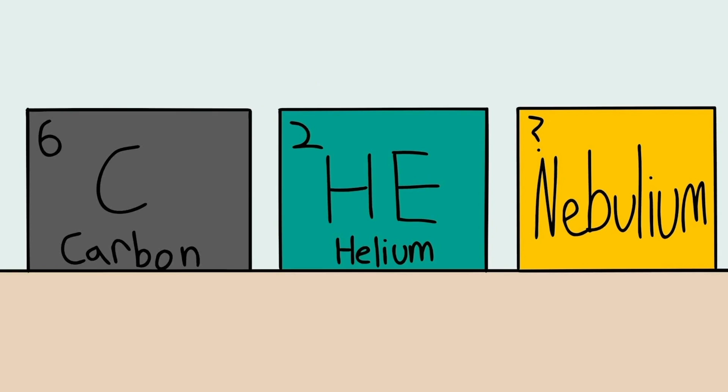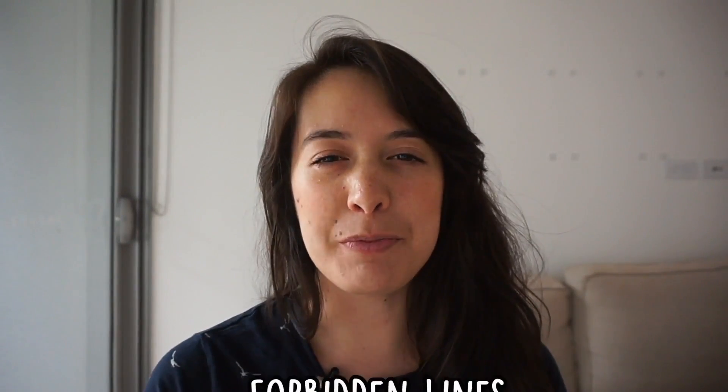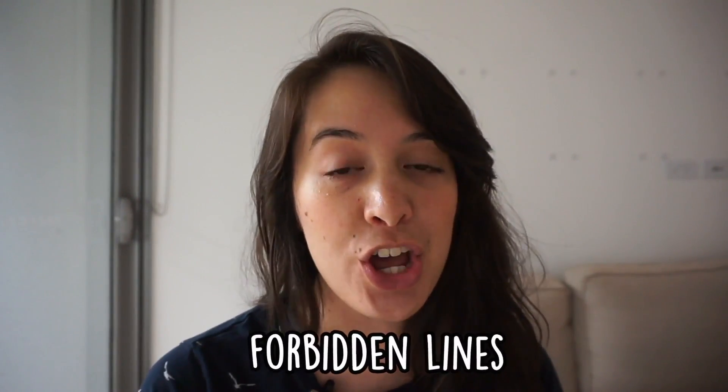So nebulium didn't exist after all. It was actually the metastable state photon from oxygen. These were given the name forbidden lines because they can't be observed anywhere on Earth.